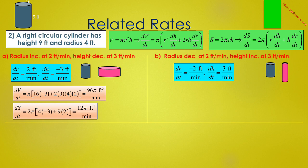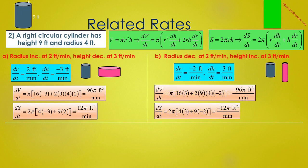In B, the radius is decreasing at 2 feet per minute and the height is increasing at 3 feet per minute, so dR/dt equals negative 2 and dH/dt equals 3. The cylinder becomes much skinnier. So dV/dt equals π times the quantity 16 times 3 plus 2 times 9 times 4 times negative 2, which is negative 96π cubic feet per minute. And dS/dt equals 2π times the quantity 4 times 3 plus 9 times negative 2, which is negative 12π square feet per minute. So in this problem, despite the fact that the height is increasing, both the volume and surface area are getting smaller.